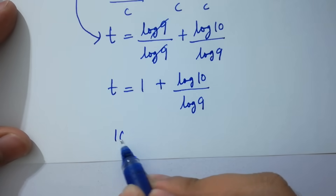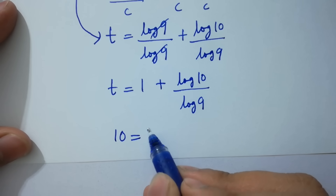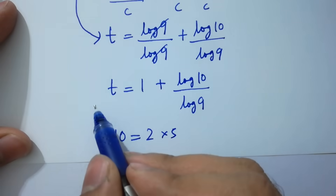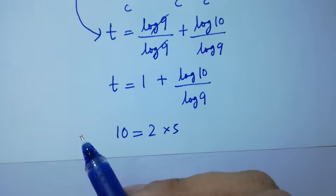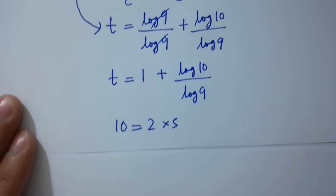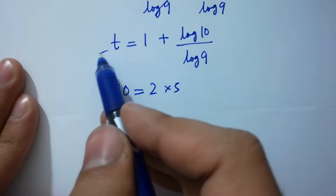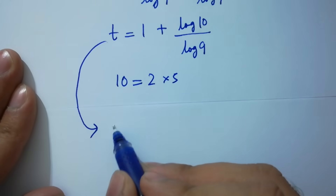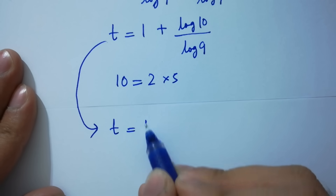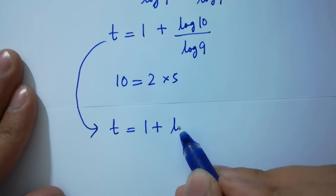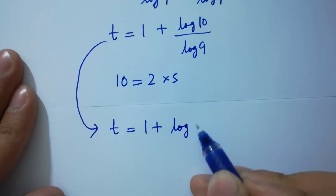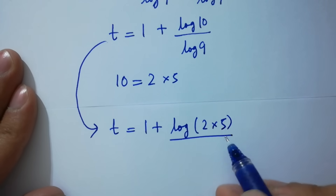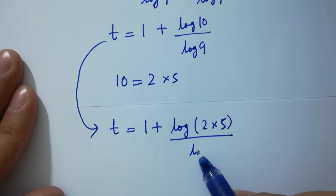Since 10 equals 2 times 5, t equals 1 plus log of 2 times 5 over log 9.